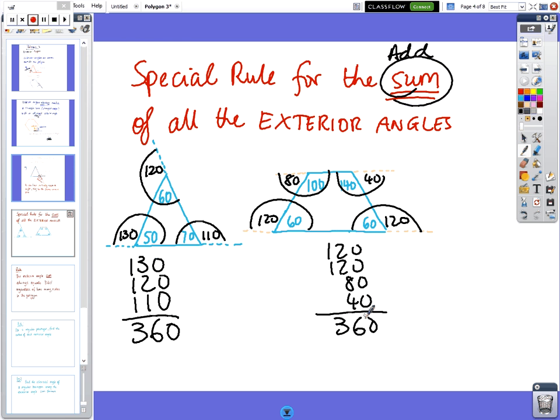And so what you find is, it doesn't matter what the shape is, it's always going to add up to 360. And so can you just copy that and come across, because we'll have a rule on the next page.